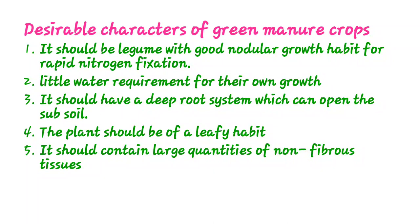The plant should have a leafy habit and be capable of producing heavy, tender growth early in its life cycle, improving the crop canopy with profuse leaves and plant parts to improve vegetative growth. It should also contain a large quantity of non-fibrous tissue for rapid decomposability, containing a fair percentage of moisture and nitrogen.